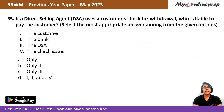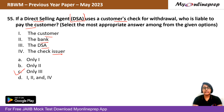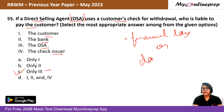Question 55: If a Direct Selling Agent (DSA) uses a customer's check for withdrawal, who is liable to pay the customer? Options are: (A) the customer; (B) the bank; (C) the DSA; (D) the check issuer. If a DSA misuses a customer's check, the DSA is responsible not just for the payment but also for any financial loss or damage caused. The right answer is C — the DSA.